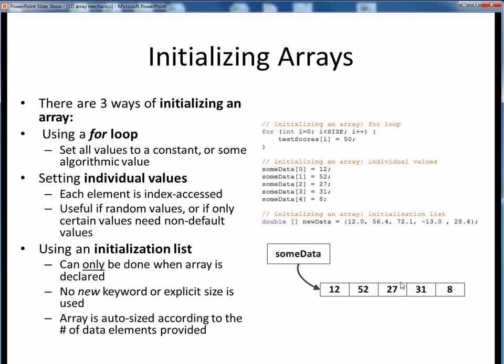Finally, there's one other way to initialize an array, and that's by using an initialization list. As we see in this last example, we declare an array of doubles on the left-hand side, then set its elements to this comma-separated list of double values within curly braces. The only catch here is that we can only do it this way at the time the array is declared, and not later on. In other words, we can't reset these values like this at some later point in time. The nice thing about this approach is that notice we don't use the new keyword or need any explicit array size. Instead, the array gets auto-initialized according to the number of data values provided.